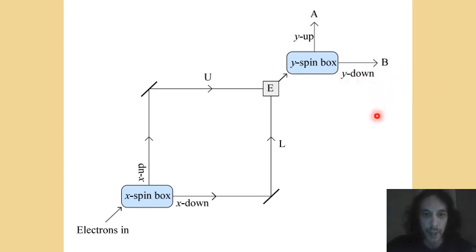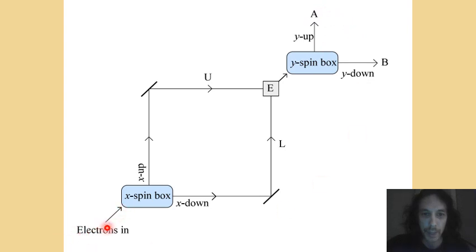But that is not actually what happens. What actually happens is that whatever the y-spin of the electrons was when they were fed in at the bottom, they will have the same y-spin when they come out at the top. So if y-spin up electrons go into this device, somehow they wind up all y-spin up at point E. If you feed y-spin down electrons in, they wind up at E all y-spin down, just like they were at the beginning. And that's a strange situation.